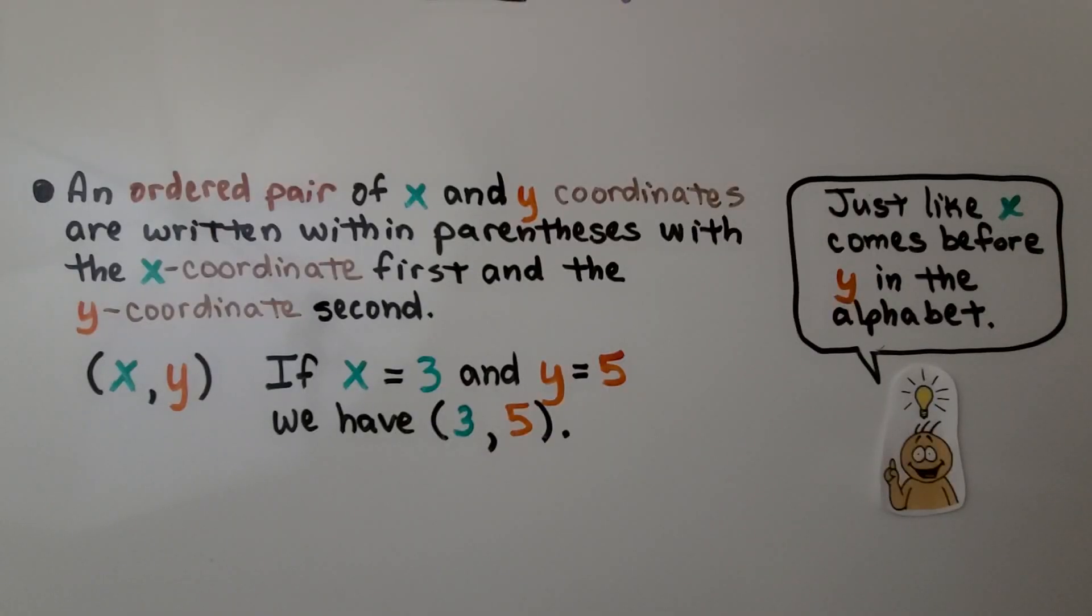An ordered pair of x and y-coordinates are written within parentheses with the x-coordinate first and the y-coordinate second. We have our x-value and our y-value. So if x is equal to three and y is equal to five within parentheses, we'd have three comma five. And just like x comes before y in the alphabet, x is the first one.